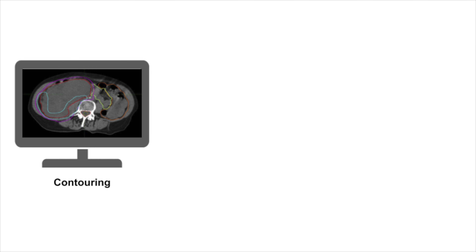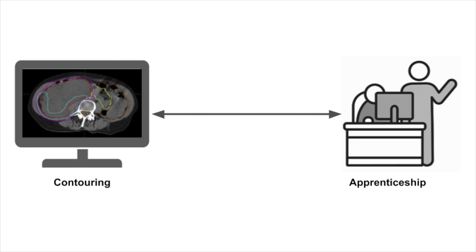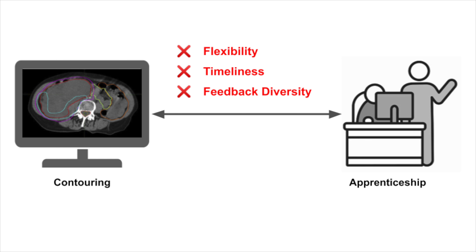Contouring is the process of outlining cancer tissues on medical images, which relies heavily on traditional apprenticeship models that lack flexibility, timeliness, and feedback diversity.